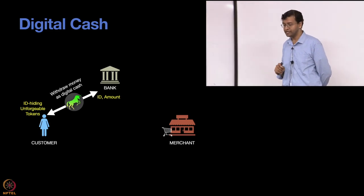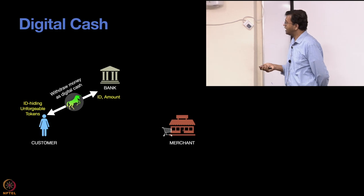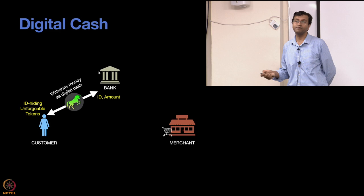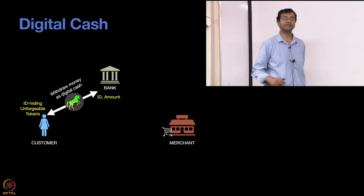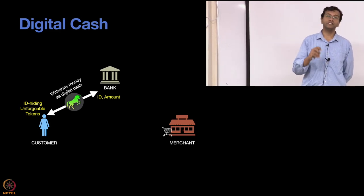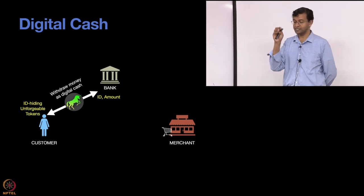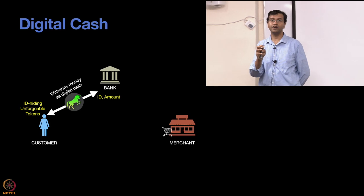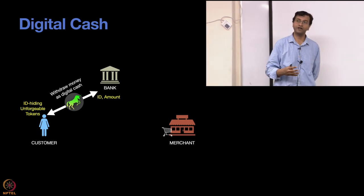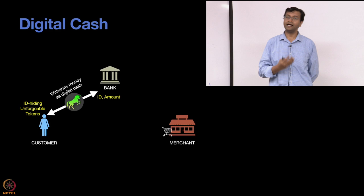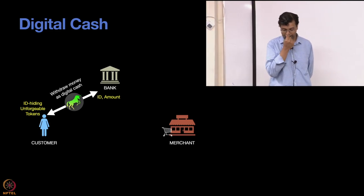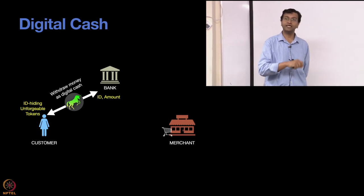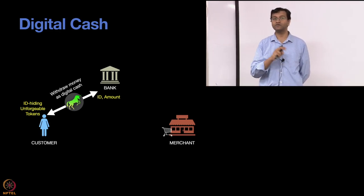On the other hand, the bank only learns your ID and the amount you're withdrawing so they can deduct it from your account. They don't see the token number — anything that can be linked to the token. The bank doesn't know which token you got. The token number gets generated randomly in the protocol in a way that the bank doesn't know that token number. Nevertheless, the bank is able to put a signature on that unknown message — that's what's called a blind signature.